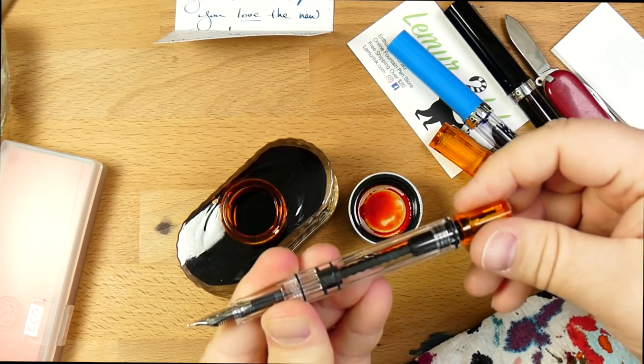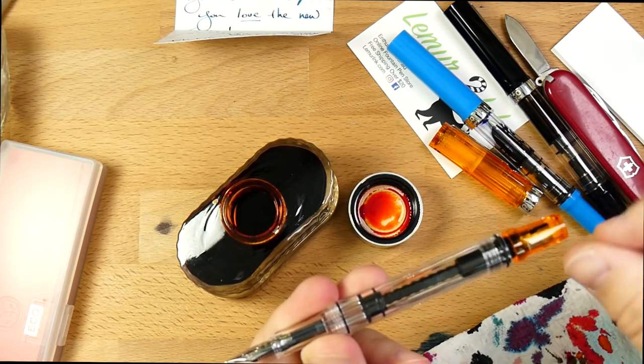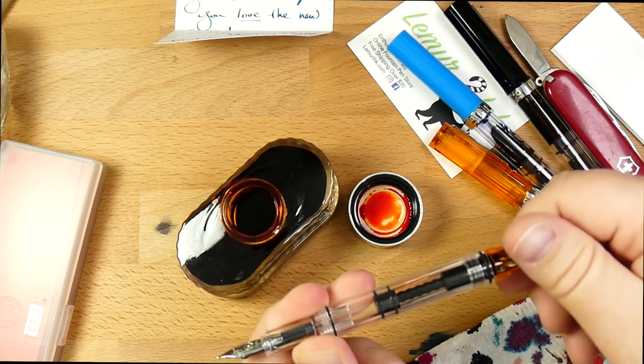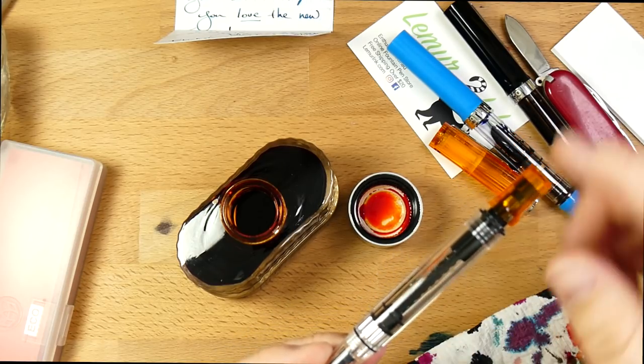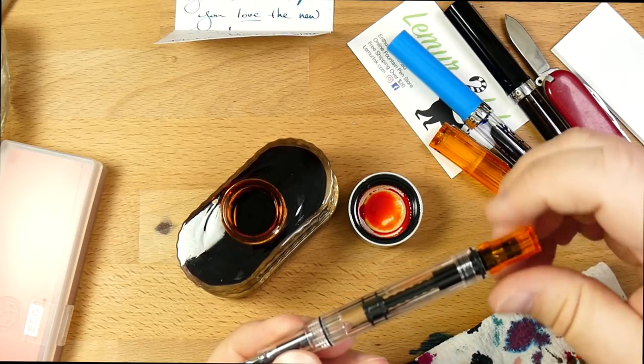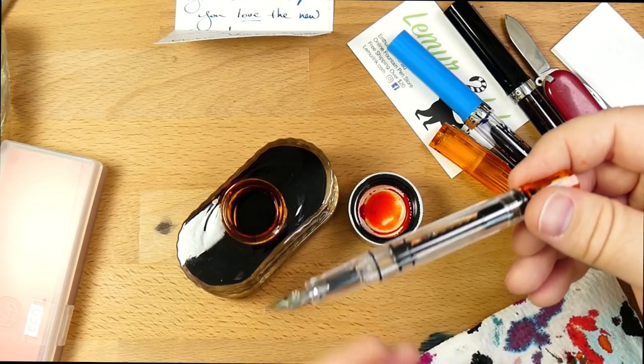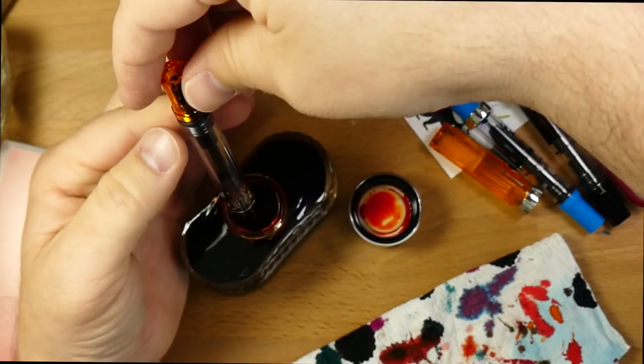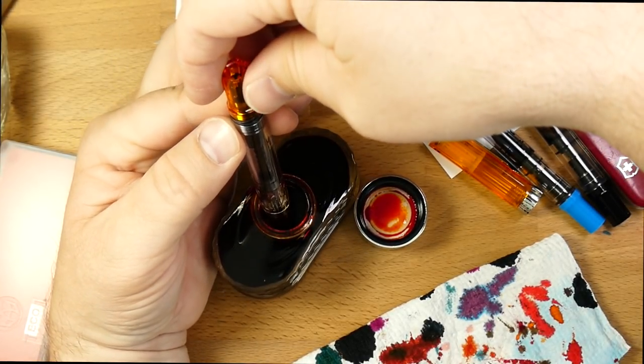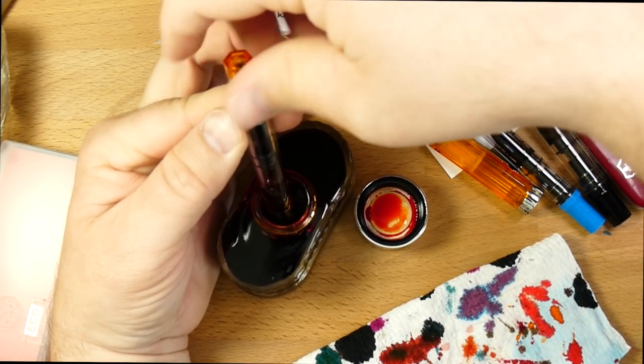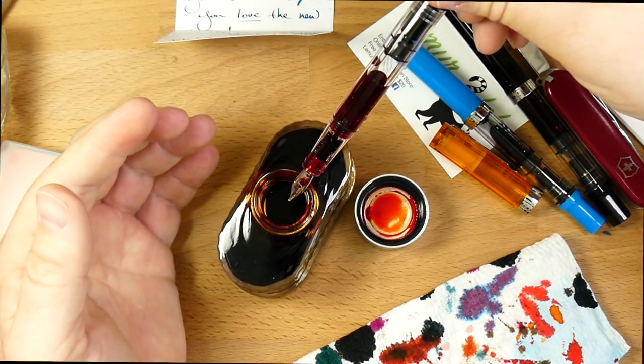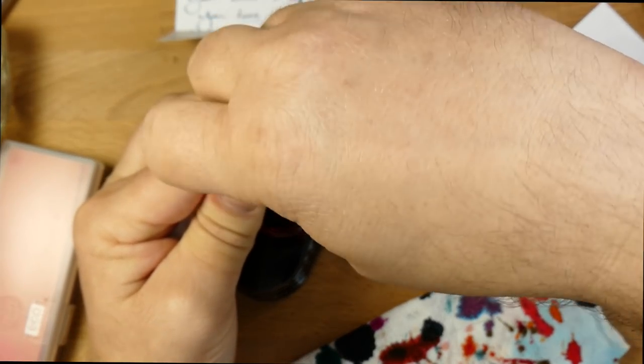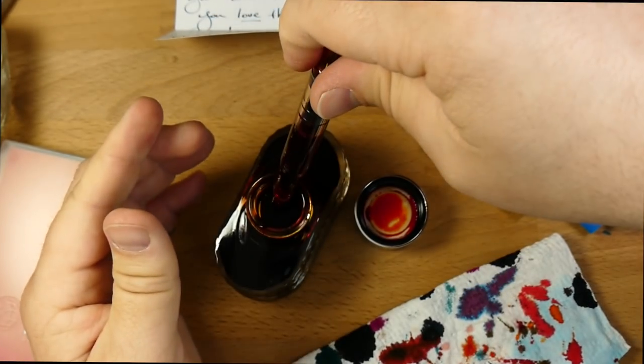And what you want to do before you put the nib in the ink is you want to put the piston all the way down. And then you're just going to work the piston. I like to draw it in once and then expel it because that gets rid of some of the air pocket. And then I like to fill it up again. That'll get you pretty close to a full fill most of the time. So, go ahead and stick this in here. Get it out of the way so maybe you can see it happening. That's actually a pretty good fill on the very first try. Squish some of that air out of there. There we go.